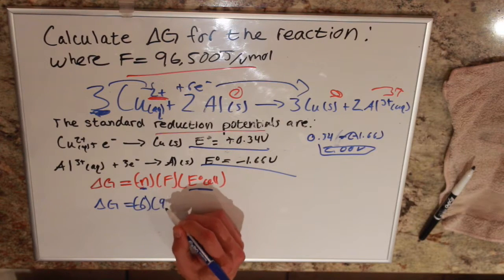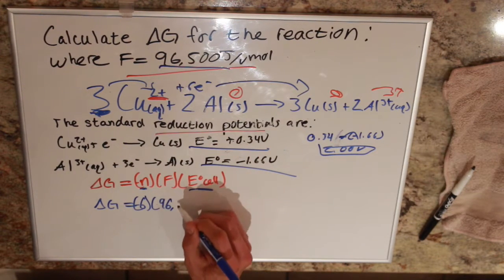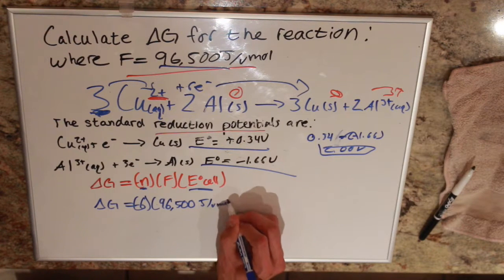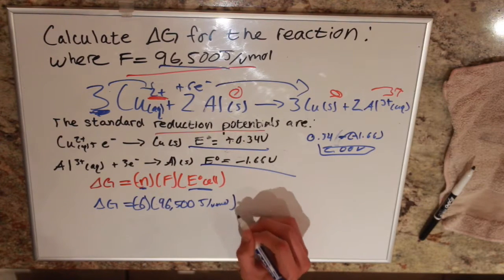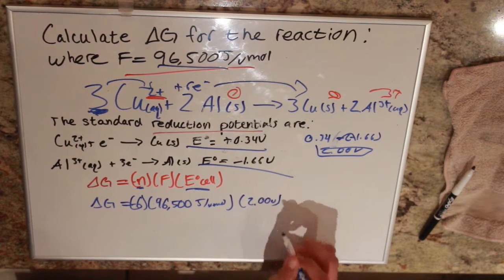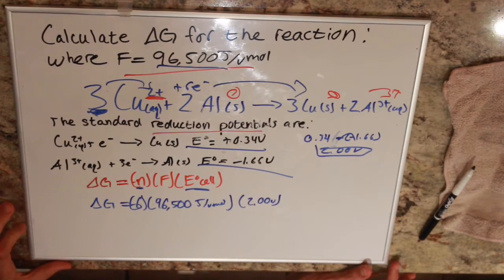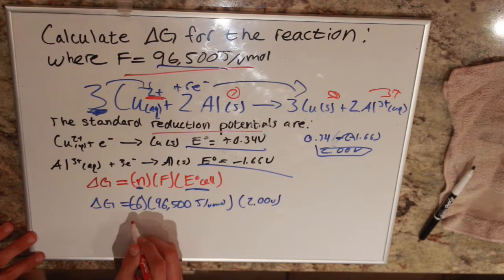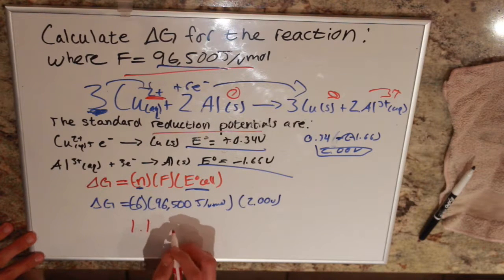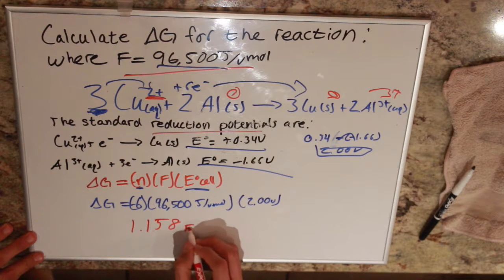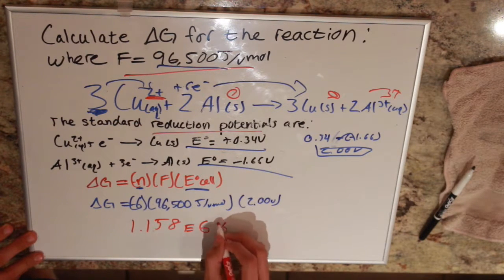Faraday's constant is given to us at the top. We have 96,500 joules over volts per mole. And then lastly, we just have to put in our cell potential, which we calculated was 2 volts. And now we have all of that, just plug that in the calculator. And it gives us a value of 1.158 times 10 to the sixth joules.